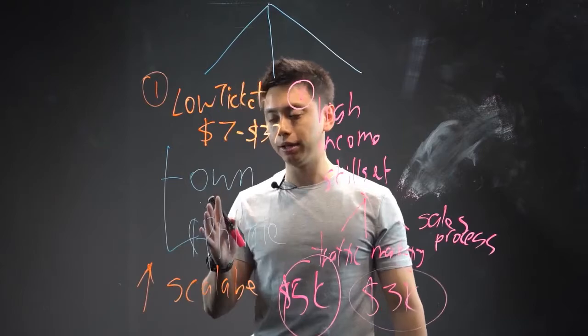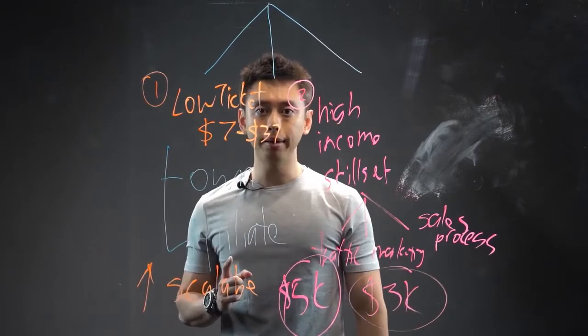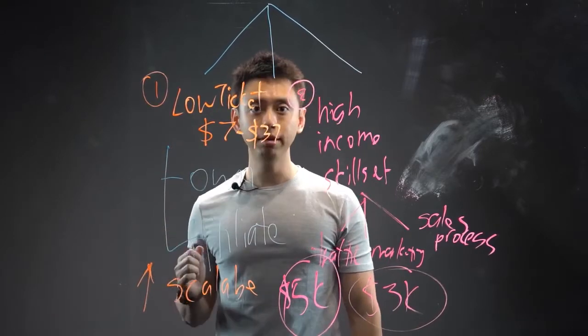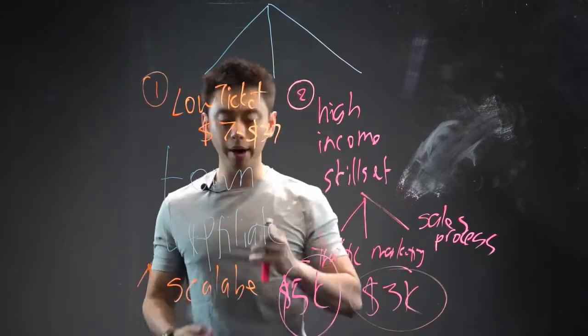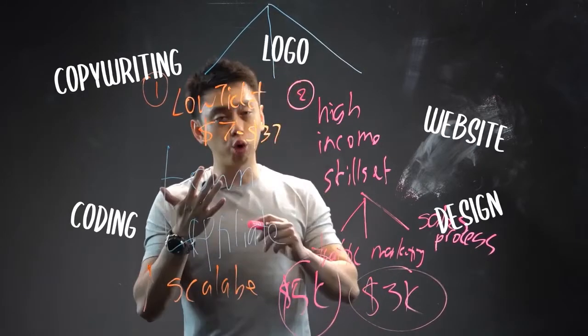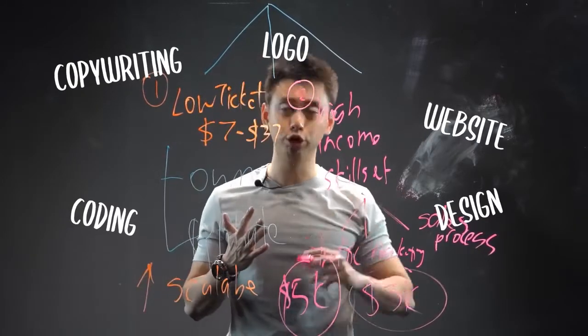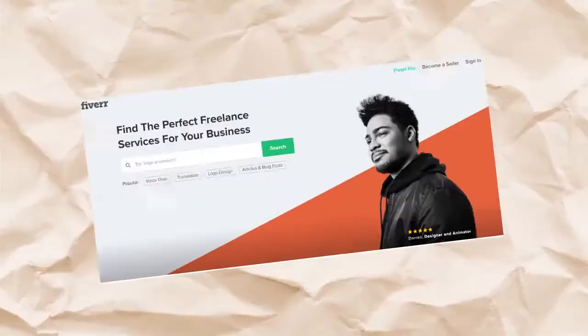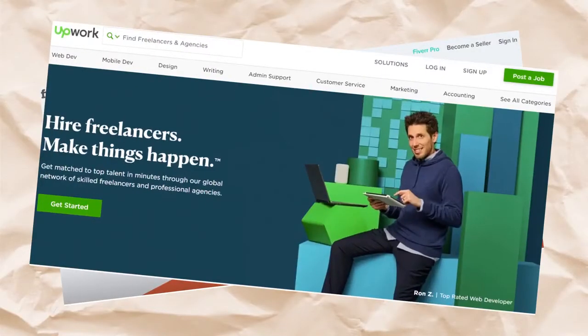When it comes to selling your own thing, the only thing that you need to be good at is in putting out content, marketing, and ads. So when you create your product, the copywriting, the website, the coding, the design, the logo, that can be easily outsourced. You can easily get somebody on fiverr.com or upwork.com to get it done for you.